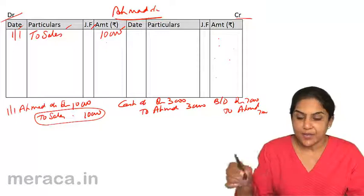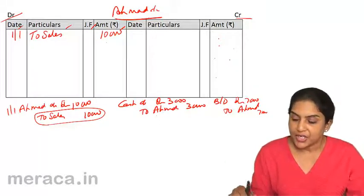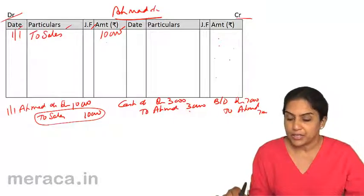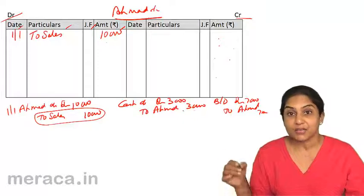The sales account I am not preparing here. Let us just see what else happens to Ahmad's account. It says here, cash account debit to Ahmad. When I say cash account debit to Ahmad, it means Ahmad's account has been credited.